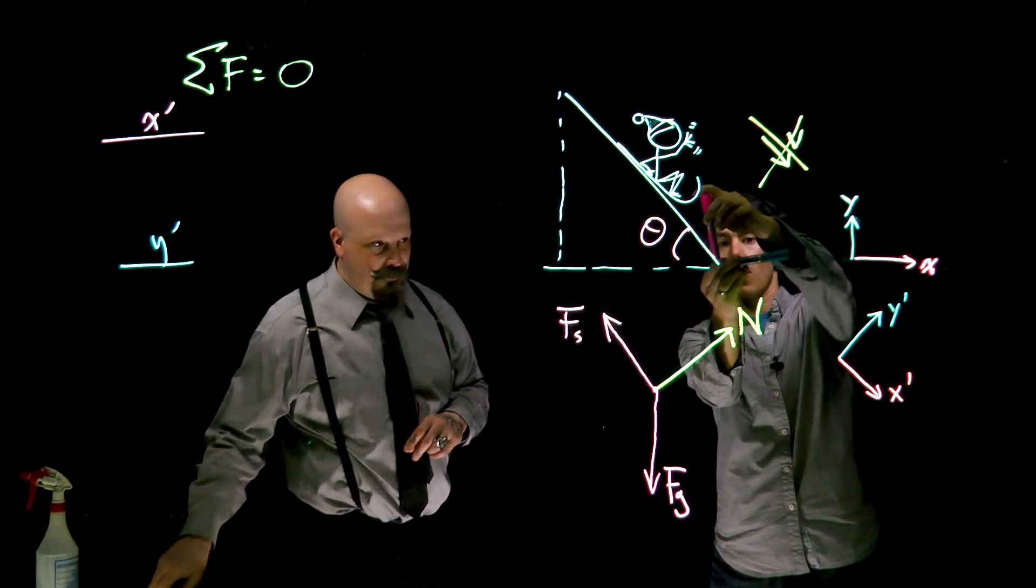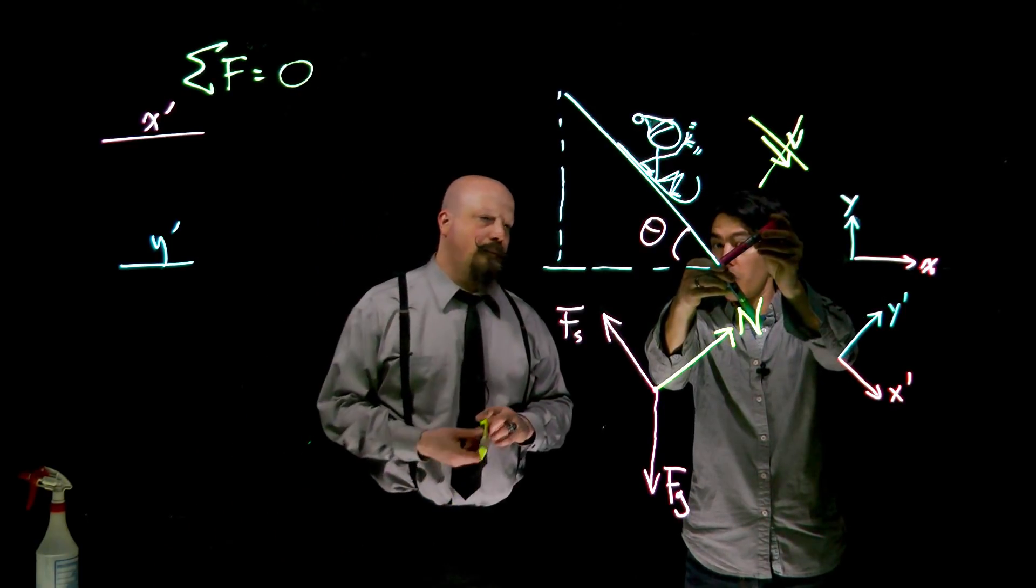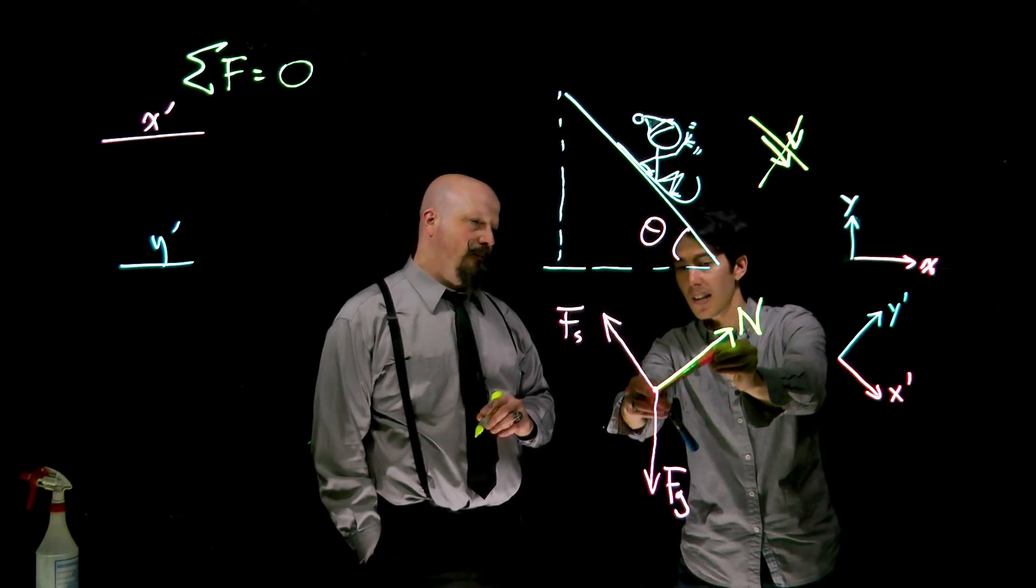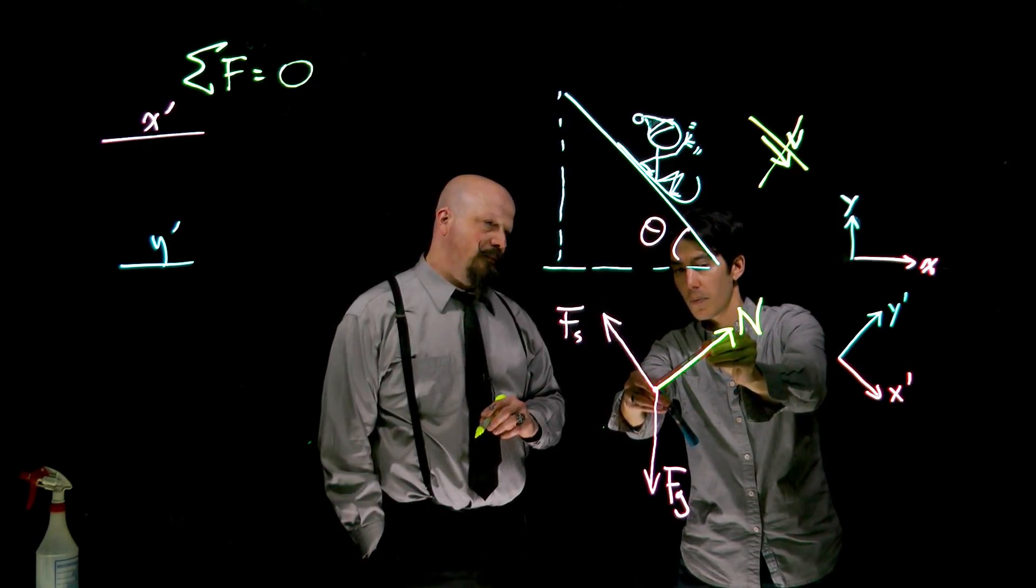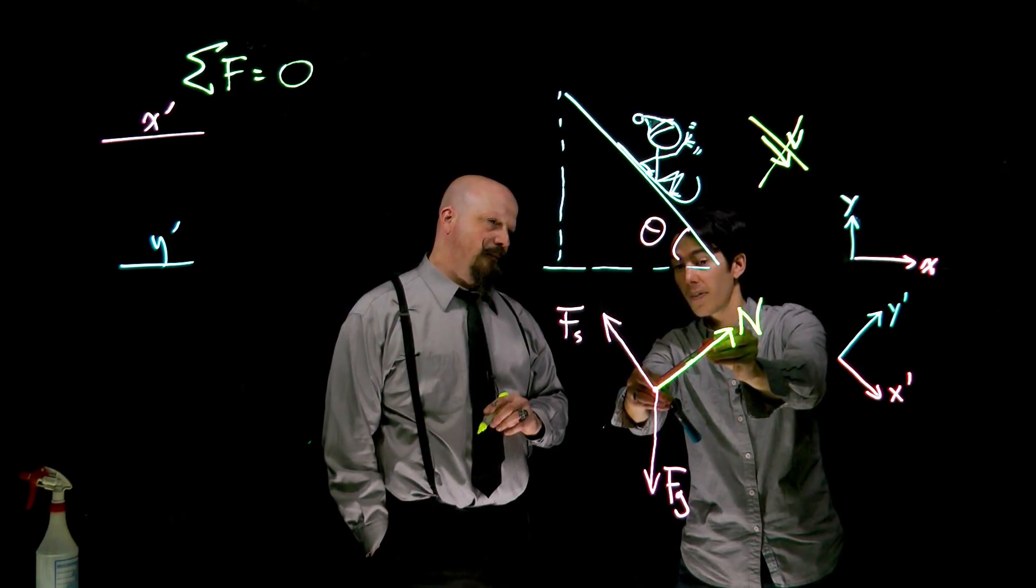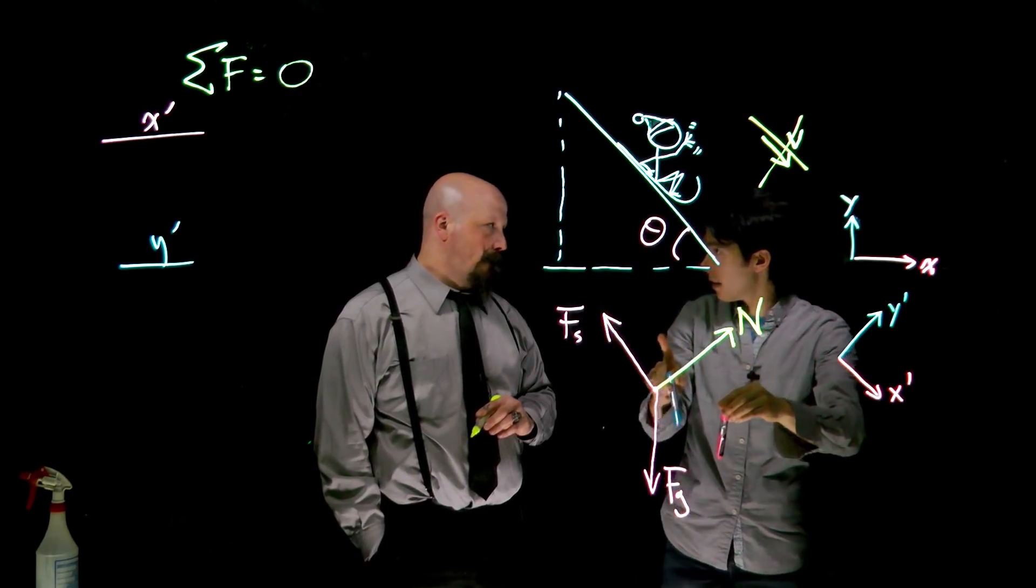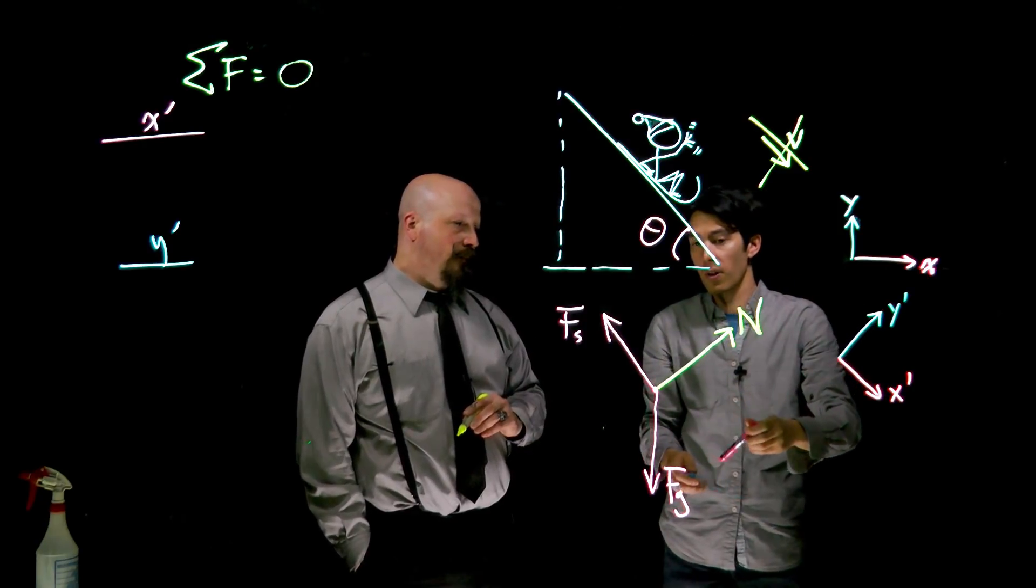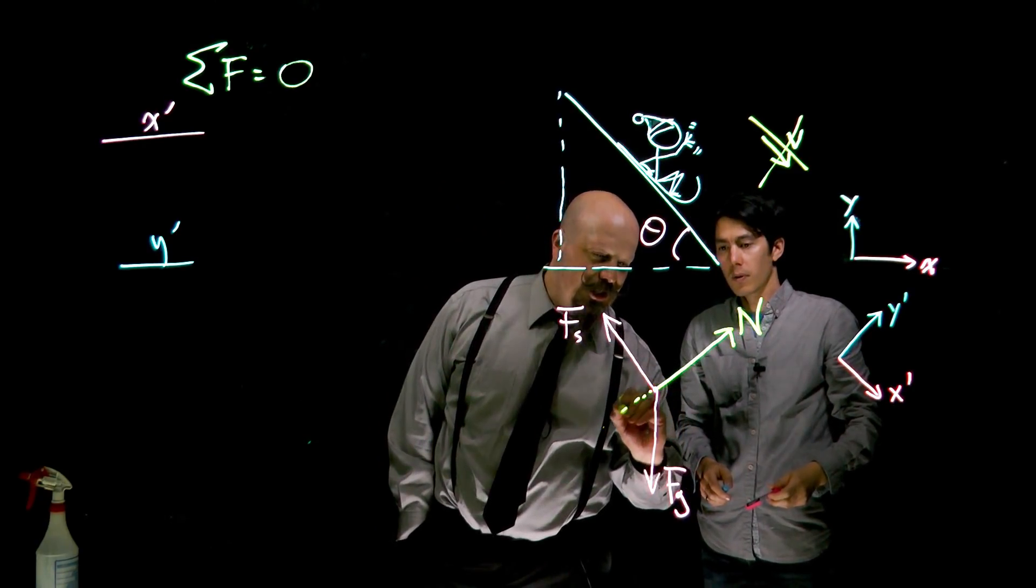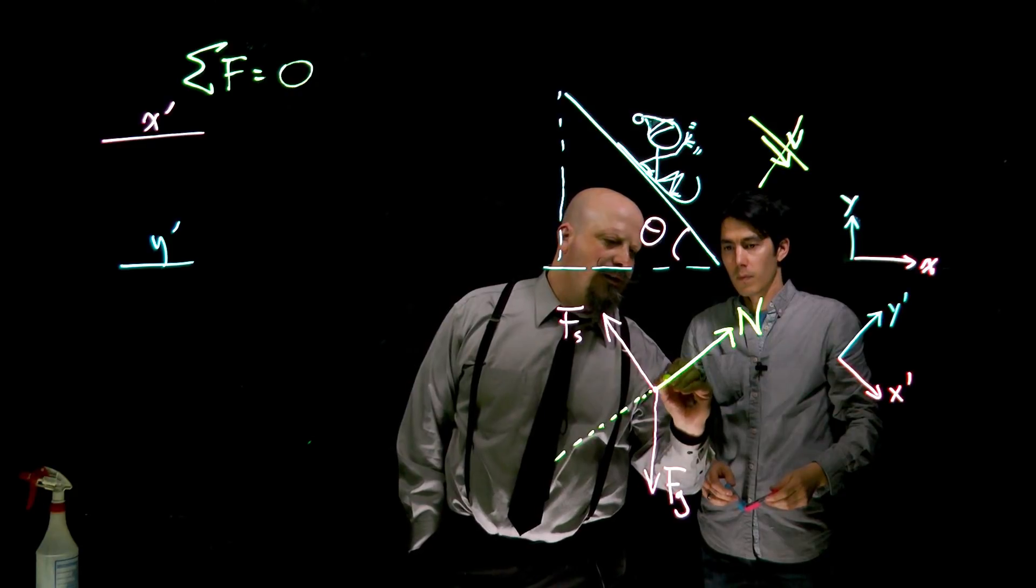And in doing this, our x and y now directions, when we're going to break things into components, you can see with these new coordinates that we've got normal forces exclusively in the y direction, we've got the friction force in the x direction, and we've just got one instead of two vectors to break into components. So we're looking at now orientation axes that go along these lines.